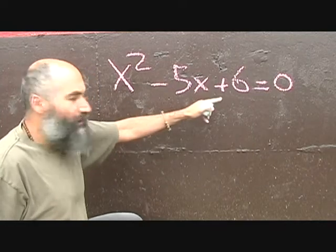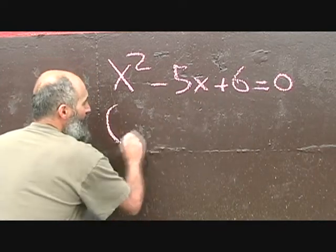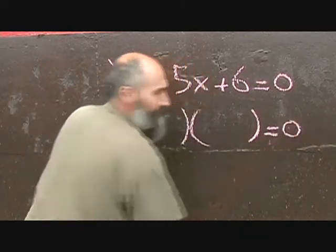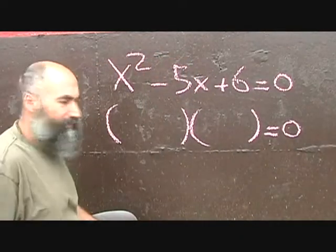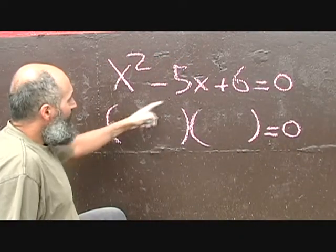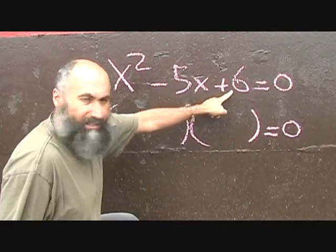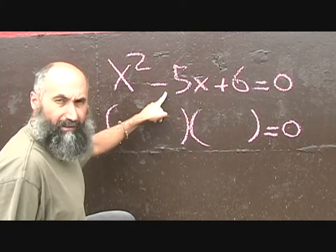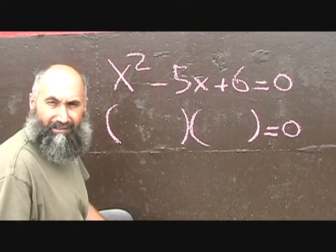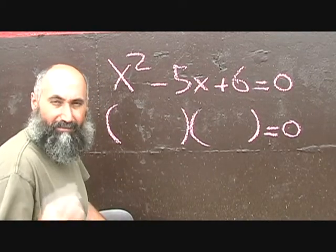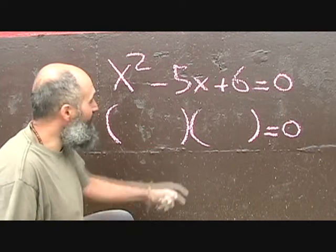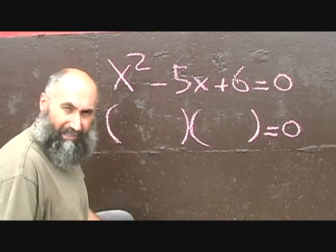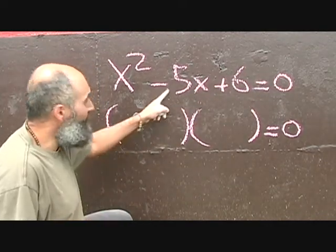When you're solving this, all you do is set up brackets equal to 0. You're looking for two numbers that multiply to give you 6 and add to give you negative 5. Negative 2 times negative 3 gives you positive 6, and negative 2 plus negative 3 gives you negative 5.